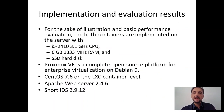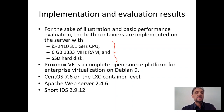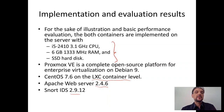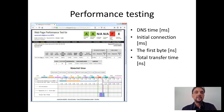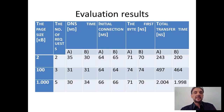We implemented the architecture on a server with the characteristics shown here. For the operating system we used Debian 9 with Proxmox virtual environment. At the container level we used CentOS 7.6. For the server we implemented Apache web server 2.4.6 and we used SNORT IDS intrusion detection system version 2.9.12. For evaluation we used publicly available web page tests and measured DNS response time, initial connection time, first byte time, and total transfer time.